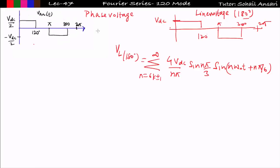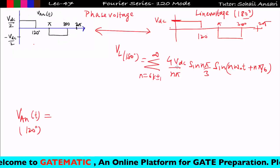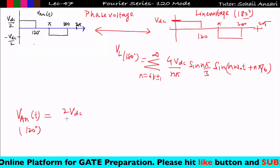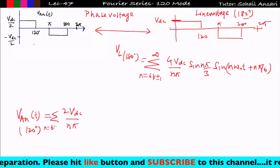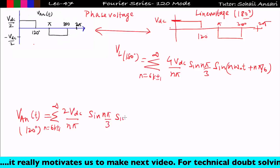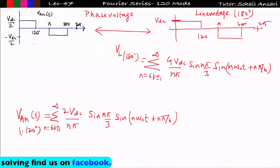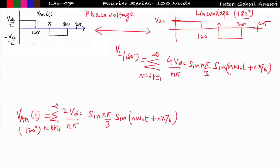The only difference between that waveform and this waveform is the peak value: there it is Vdc, here it is Vdc/2. Everything else remains the same. So for the phase voltage van(t) in 120-degree conduction mode, I simply replace Vdc with Vdc/2, giving: summation for n = 6k ± 1 to infinity of (2Vdc / nπ) · sin(nπ/3) · sin(nω₀t + nπ/6). The waveform of line voltage in 180° mode and phase voltage in 120° mode are identical except for peak value.